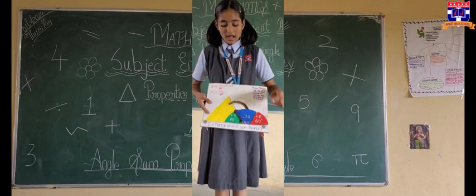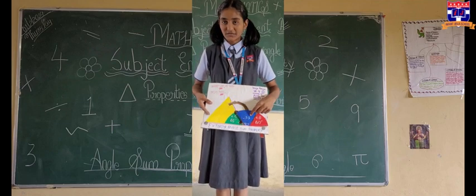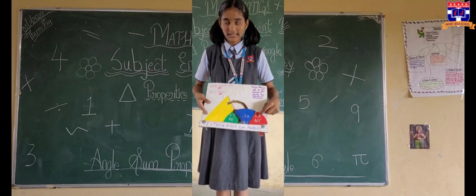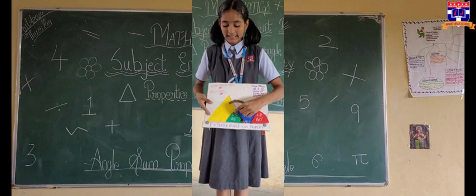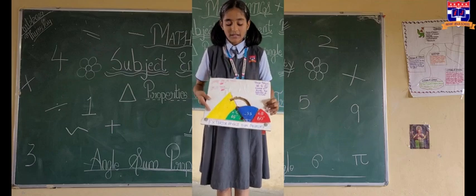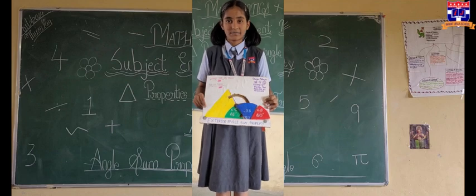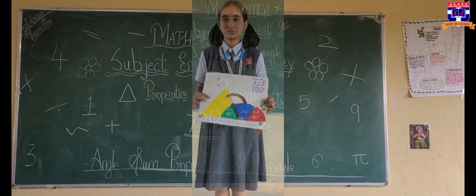Angle A is 65 degrees, angle B is 60 degrees, and angle C is 65 degrees — all together making 180 degrees. Thank you.